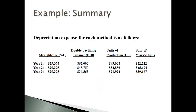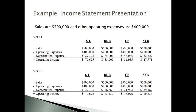Now let's compare the depreciation expense for each year using the four most commonly used methods. Straight-line gives an equal amount each year. Double declining balance and sum of the years' digits start high and decrease each year. Units of production varies with the actual quantity produced. Using a company with $500,000 in sales and $400,000 of other operating expenses, the method used to estimate depreciation expense has a significant impact on operating income. A lower estimated depreciation expense gives higher income, and the impact in the first year differs from the third year or later. A company with the same asset can report different operating income depending on the depreciation method used.